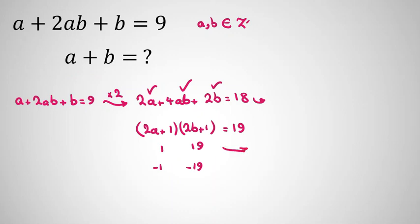So in this case, in the first case, let's find a and b in each case. In the first case: 2a plus 1 equals 1, so 2a equals 0, so a equals 0. 2b plus 1 equals 19, so 2b equals 18, so b equals 9.